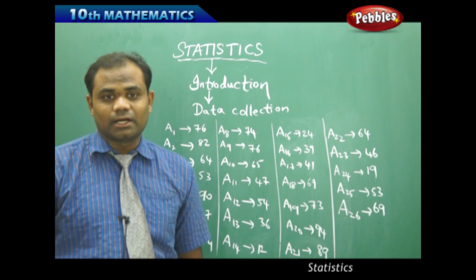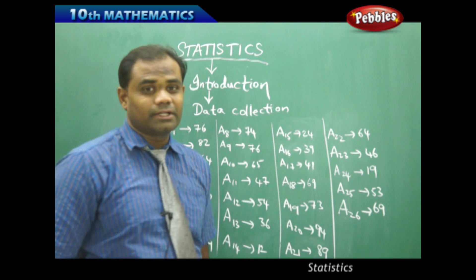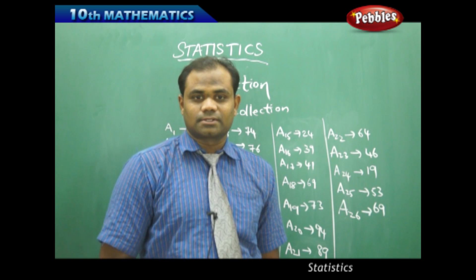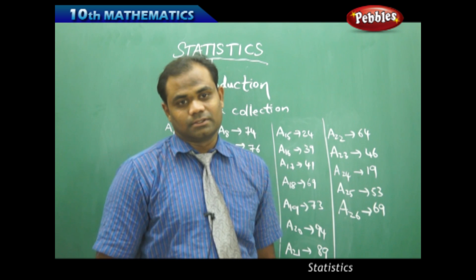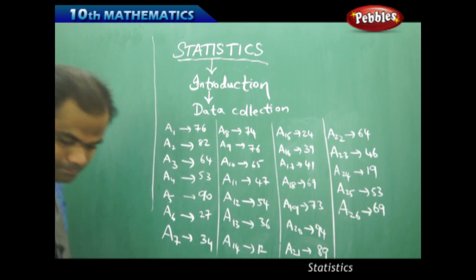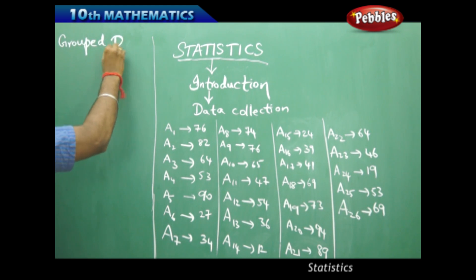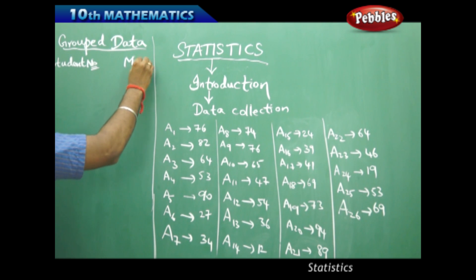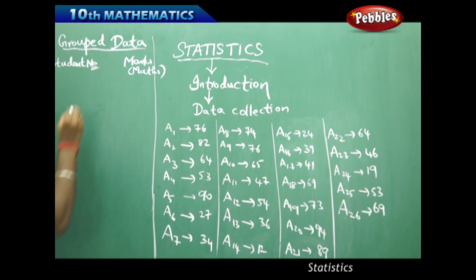This kind of arranged data is the initial step of statistics. Arranging the data is very important in statistics, more than just understanding it. Once the data is arranged, we examine and study it, then make predictions using different properties of statistics. To arrange this data, I'll place student number in the first column and marks obtained by the student in the second column.